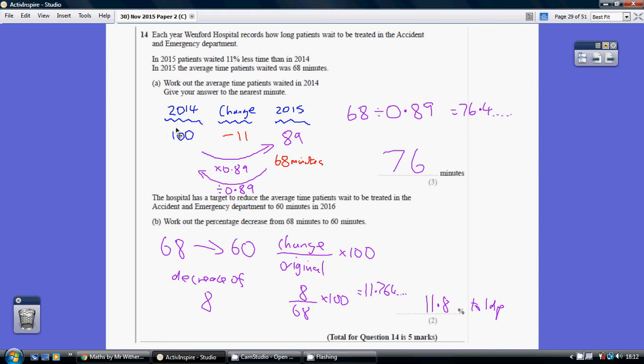So as always, set up your 100 in the original column. So that bit in blue is really your starting point. We wait 11% less. So that's 11 of 100. So we're taking away 11.